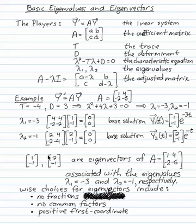The [1, -1] and [2, -1] are called eigenvectors of the matrix A = [1, 4; -2, -5]. They're associated with the eigenvalues -3 and -1, respectively.